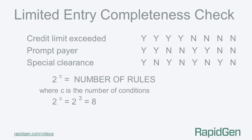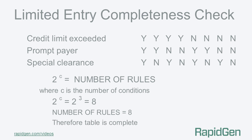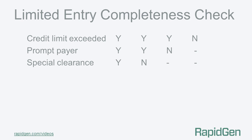Two to the three is eight, and we can see we have eight rules in the example. Therefore we know that the table is complete, because two to the three is eight and eight is the number of rules.